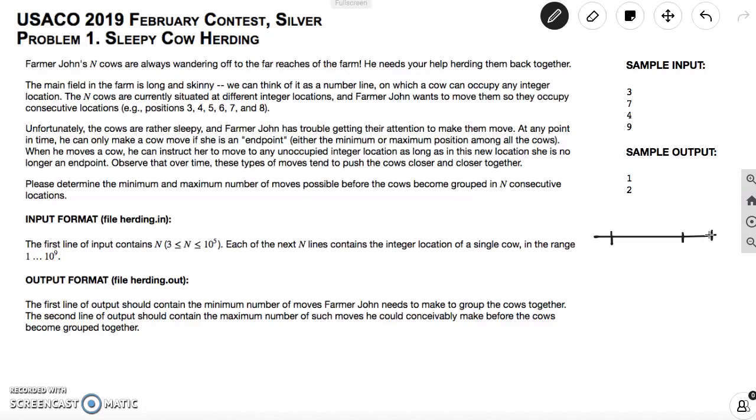For example, a legal move would consist of this one moving inside between these two endpoints. However, this cow moving to this location would not be a legal move because the rightmost endpoint is continuing to stay as the rightmost endpoint.